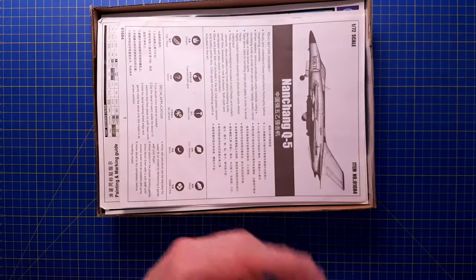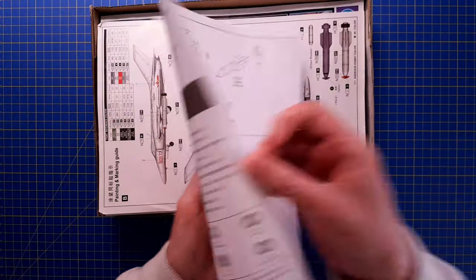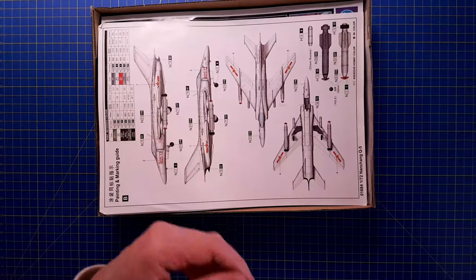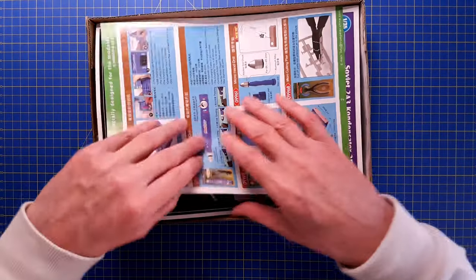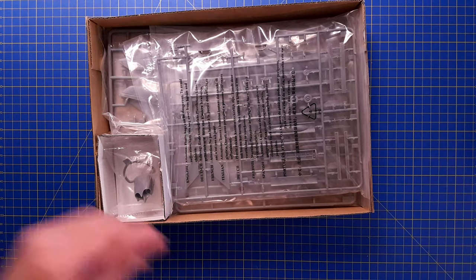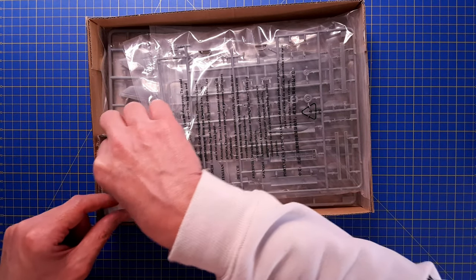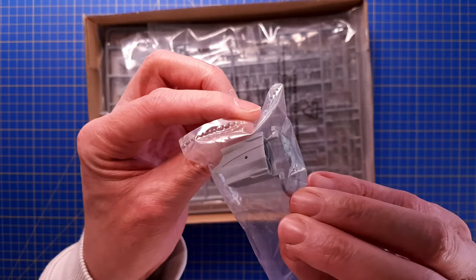If we open up the box, we have instructions, a paint callout, some advertisement, and a single molded tail part.